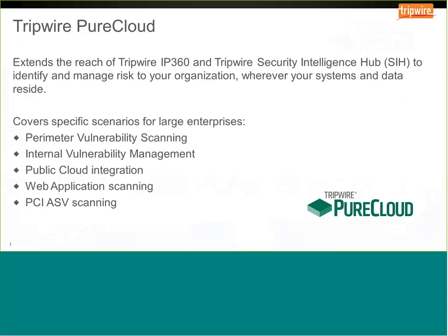What we'll be talking about today is Tripwire Pure Cloud. This is essentially an extension of your Tripwire IP 360 vulnerability management solution, as well as a source of data for the Tripwire Security Intelligence Hub. Going beyond just a device profiler scan of your internal network, Pure Cloud offers additional use cases: scanning the perimeter, performing internal vulnerability assessment of remote offices, partner networks, and M&A targets — all without deploying an appliance.